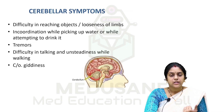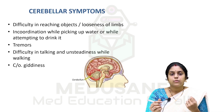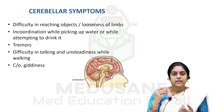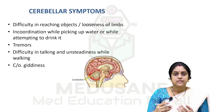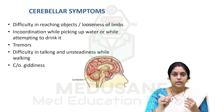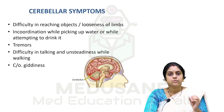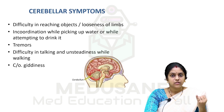Next we move on to cerebellar symptoms. The cerebellum is the part of the brain which helps in coordination, and it also helps in every motor activity that we do. For example, if you plan to write, the brain sends signals to initiate the writing process — how to take the pen, how to hold it, how to actually write — and all of this is beautifully coordinated by the cerebellum. The cerebrum, cerebellum, and sensory system all work hand in hand to produce smooth movement.